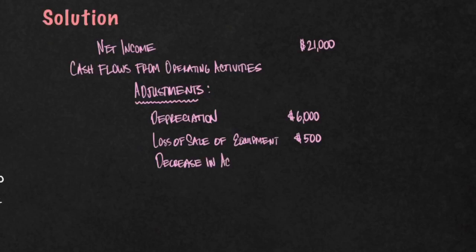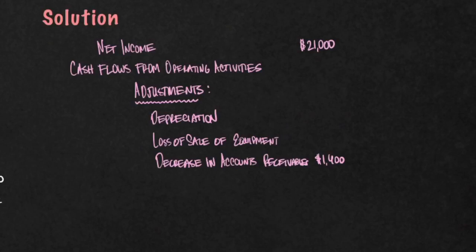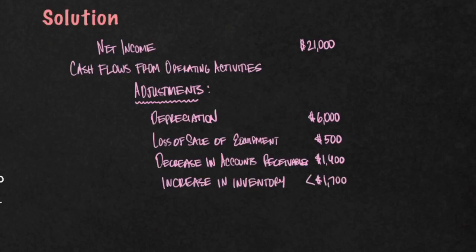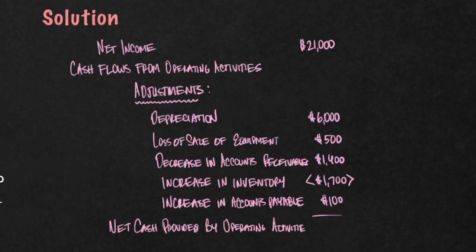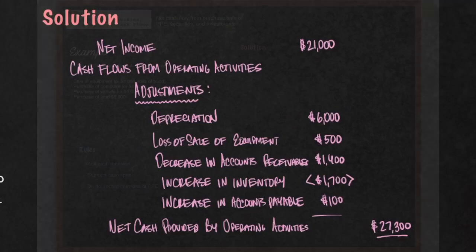Then we had that decrease in Accounts Receivable — it's an asset, so you do the opposite. It was decreasing, so now you're going to add that back. Next, we have an increase in Inventory, also an asset, so do the opposite. Since it was increasing, you want to subtract it. Finally, we have an increase in Accounts Payable — this is a liability, so whatever is happening you match that on the Statement of Cash Flows. It's an increase, so you're going to add back the difference of $100. You combine these adjustments with the net income and you get the net cash provided by Operating Activities of $27,300. That's your first section of the Statement of Cash Flows.